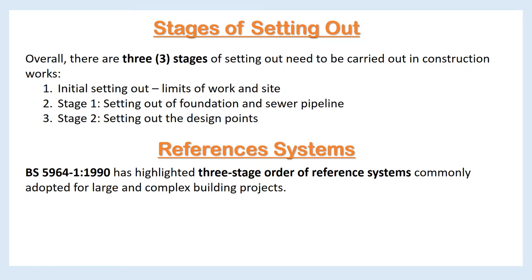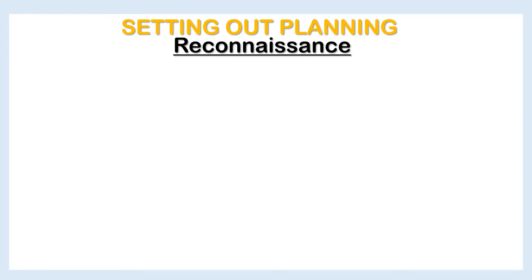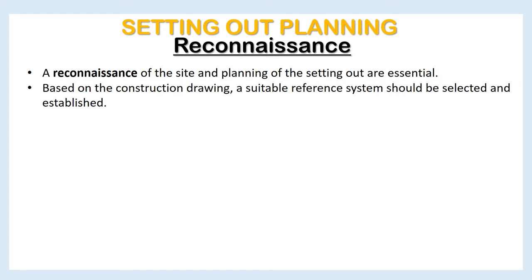BS 5964-1:1990 has highlighted a three-stage order of reference systems commonly adopted for large and complex building projects: 1. Primary system, 2. Secondary system, 3. Position points — the location of the details of the building. A reconnaissance of the site and planning of the setting out are essential. Based on the construction drawing, a suitable reference system should be selected and established.